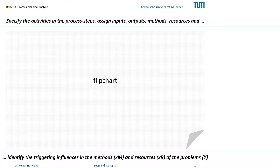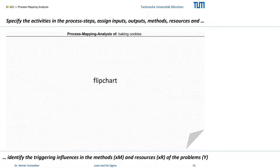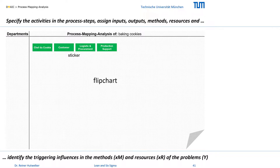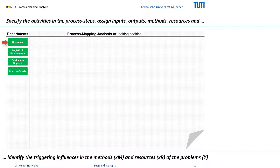In the workshop I first note the name of the process in the first line of the first flipchart. Then I write the names of all departments involved in the process steps on stickers. Next we order these departments in the first column in the chronology of their appearance in the process. This is the prerequisite for arranging the activities on the flipchart in the typical cascade from the upper left to the lower right side.